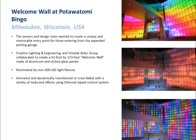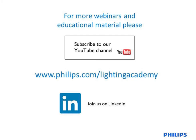At the Potawatomi Bingo Hall in Milwaukee, Wisconsin, they had a very dynamic welcome wall. There are actually two different types of applications: the top two pictures utilize a backlighting-type wash application, while the bottom picture highlights what you can do with spotlighting — small spotlights placed behind the facade. In addition to having a smooth, continuously washed wall with dynamic lighting, you can create the visual interest of a spotlight highlighting each area. There are over 600 LED fixtures in the 62-foot by 123-foot wall, and because of its scale and number of fixtures, they utilized an Ethernet-based control system.